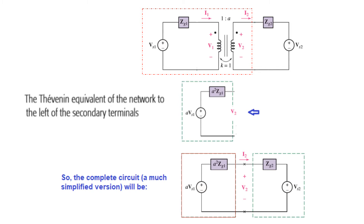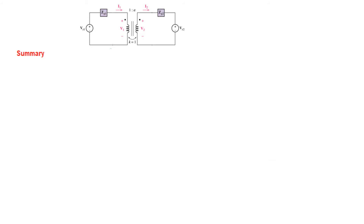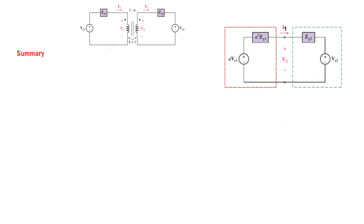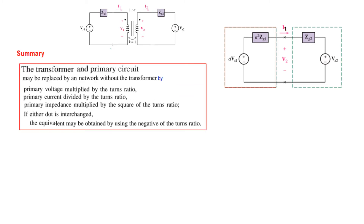To summarize our findings for the left-hand side circuit replacement: we replaced the primary side from its terminals onward. The primary voltage Vs1 is multiplied by the turn ratio A, the current is divided by the turn ratio, and the impedance ZG1 is multiplied by the square of the turn ratio A².